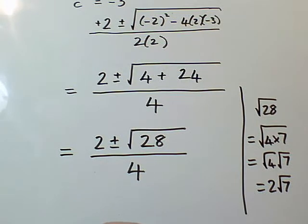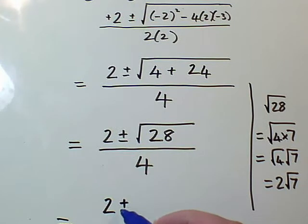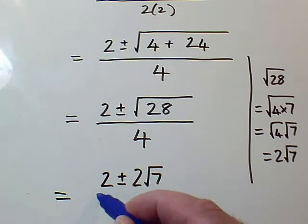So this 28 is twice the square root of 7. So I'm going to get equals. And I'm going to get 2 plus or minus twice the square root of 7 all over 4.